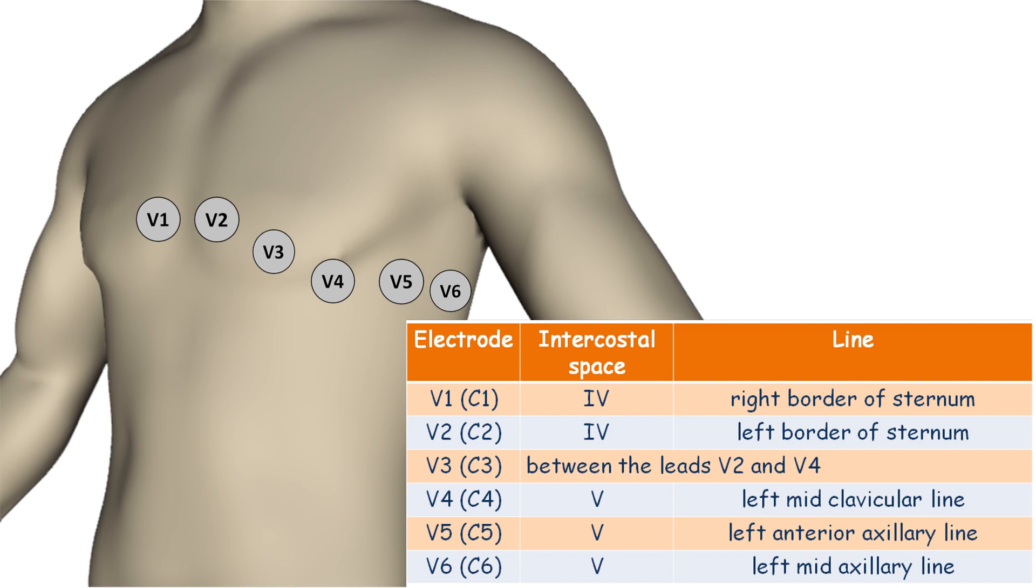V4 is attached at the 5th intercostal space at the left midclavicular line. V3 is placed midway between the leads V2 and V4.